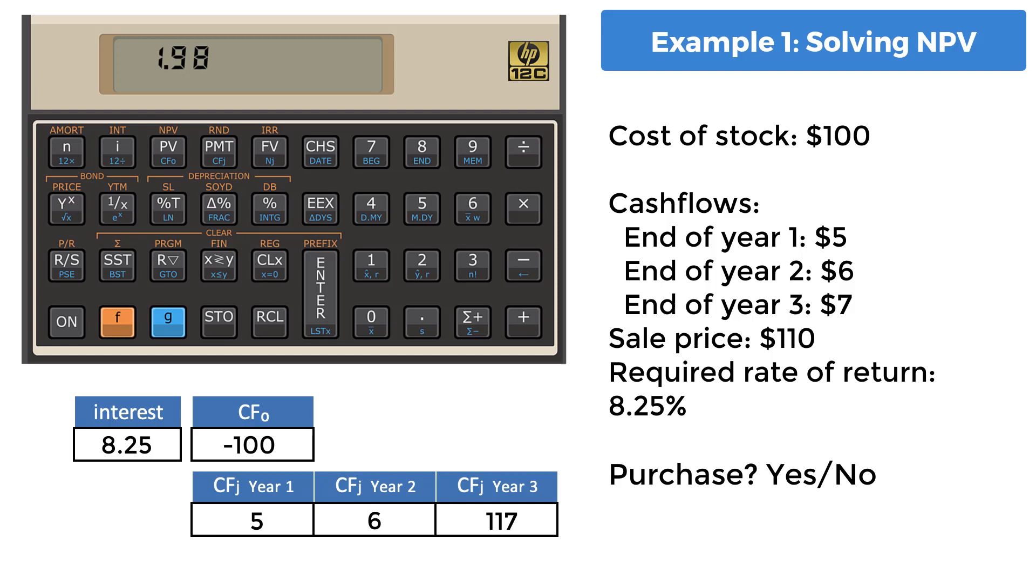Which is a positive value. This positive value does mean that the expected rate of return is exceeding the required rate of return. To see this answer with greater accuracy, press the keys prefix F and 4. You can always switch back to two digits by pressing prefix F and 2.